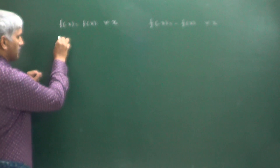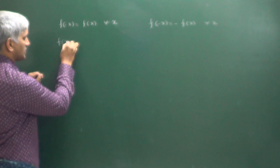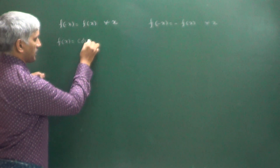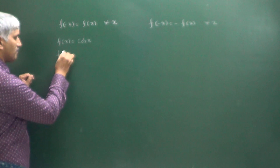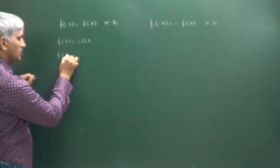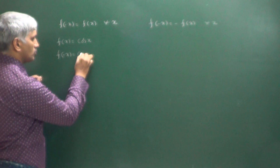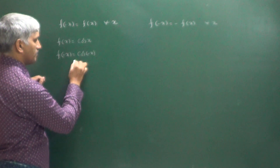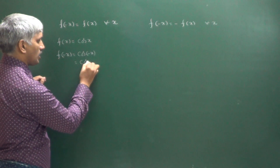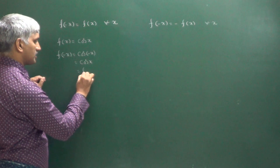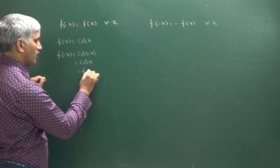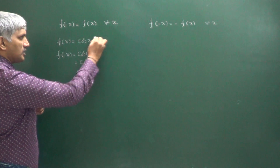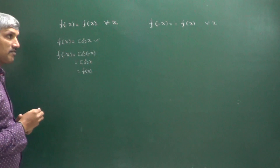Let me take a simple example. f of x is equal to cos x. What is f of minus x? f of minus x is equal to cos of minus x. You know cos of minus theta is cos theta, so it becomes f of x. So f of minus x equals f of x. Therefore, this function is an even function.